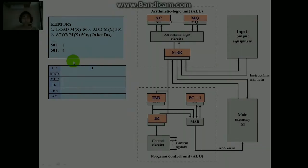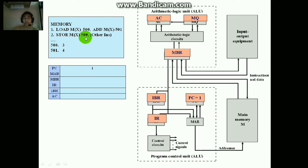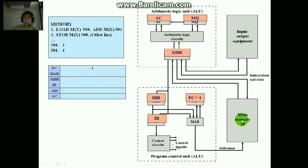Now let's see how the memory thing works in IAS. Take this as a problem: the first word has two instructions — load MX500 as the left instruction, and add MX501 as the right instruction. Word 2 has store MX500 and another instruction on the right. We have used memory locations 500 and 501, and main memory stores the value 3 at location 500 and the value 4 at location 501.